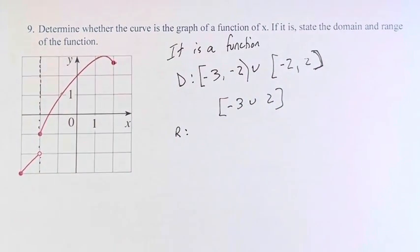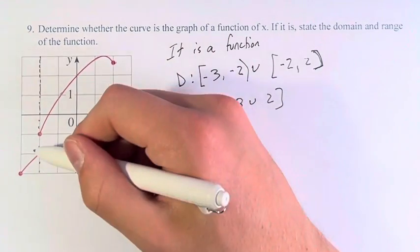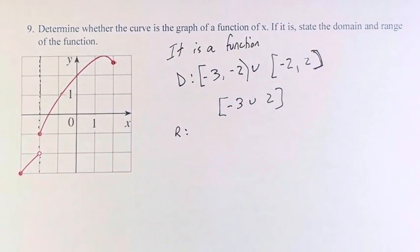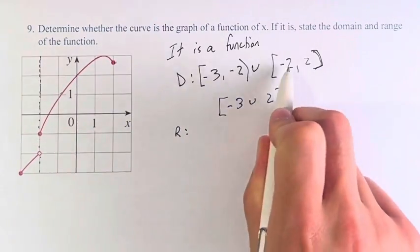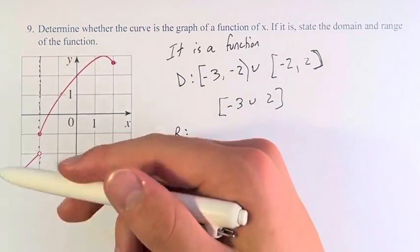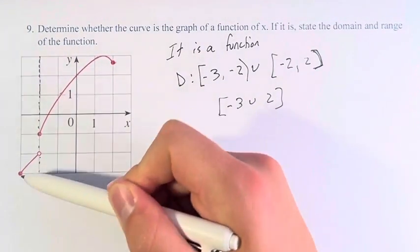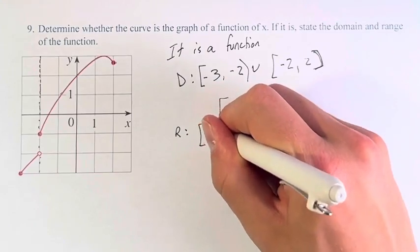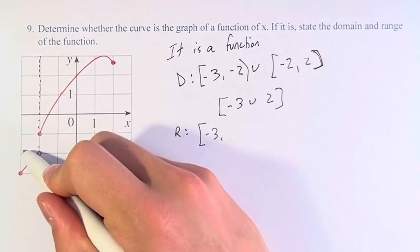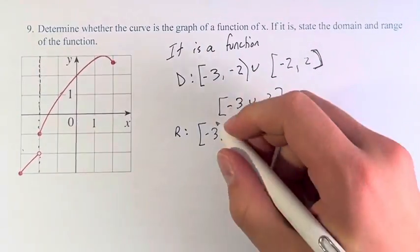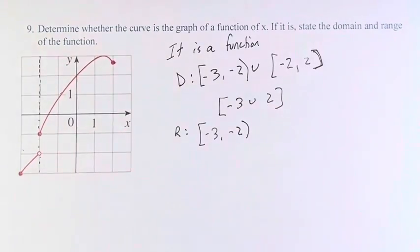Next, we have the range, which is all the y values that the function can take. This is going to be a little bit different because of the break in the function. It will actually be two separate intervals. So, we start at the lowest point, which is negative 3. And, in a similar way as the last one, it goes up to negative 2, but it doesn't include negative 2 because we have an open circle.